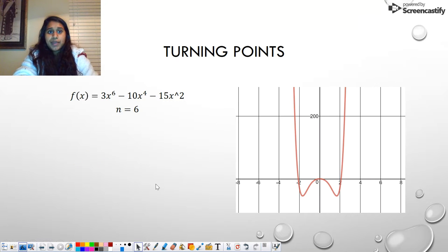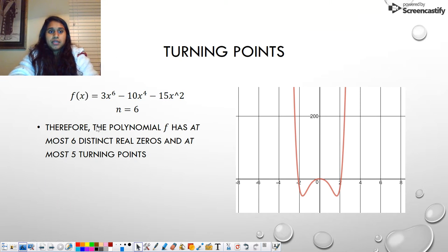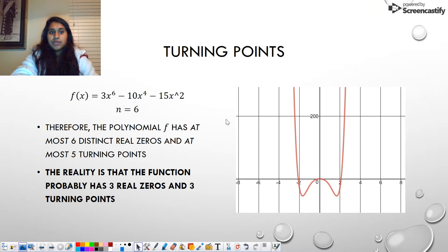So that means this is the same exact example from before that tells me if n equals 6, then its distinct real zeros would be 6 and its turning points would be 5. But again, it's not just 6 and 5. It's at most. It's a possible number of 6 real zeros and a possible number of 5 turning points. But that's the most it could have. It's not a guarantee it will have those values.